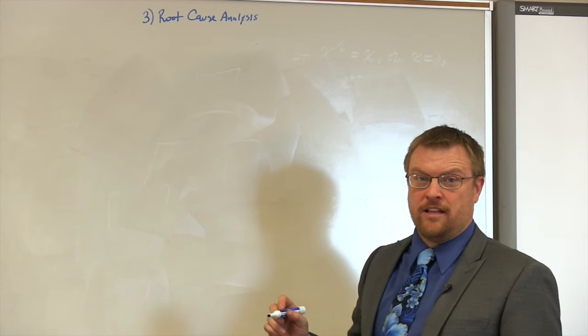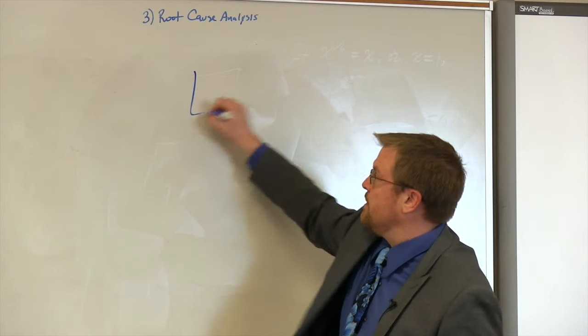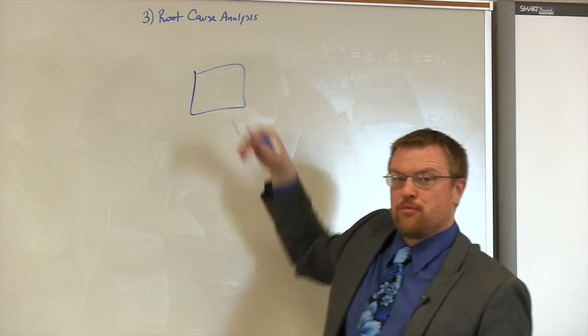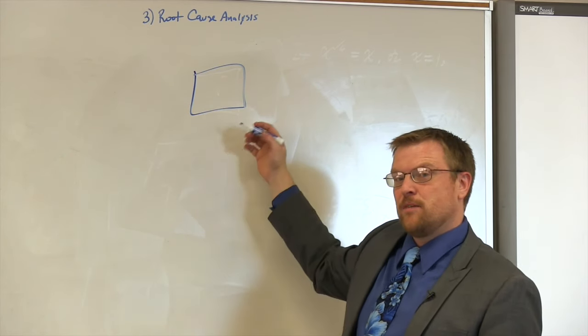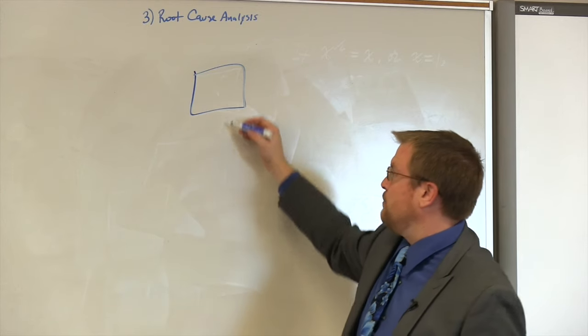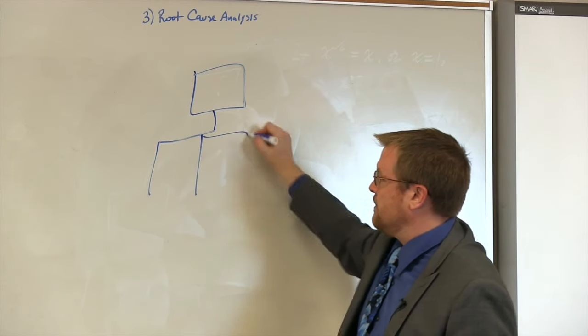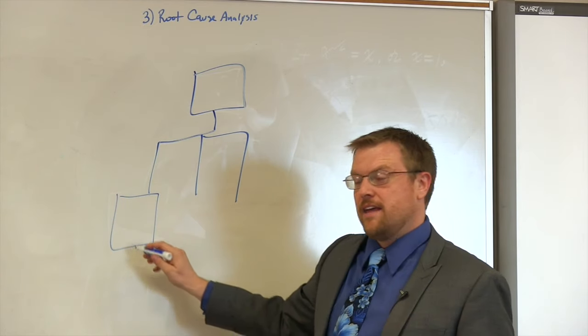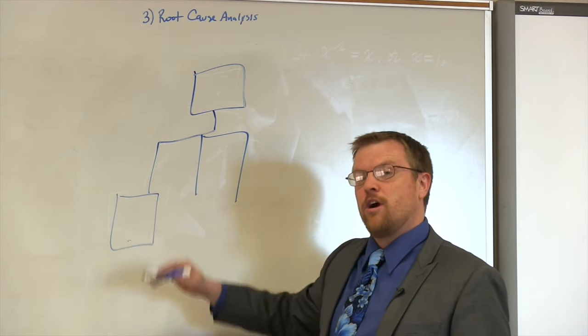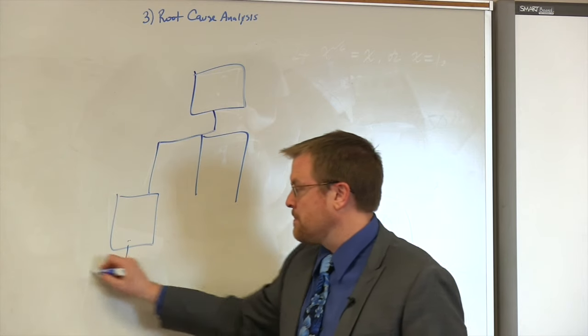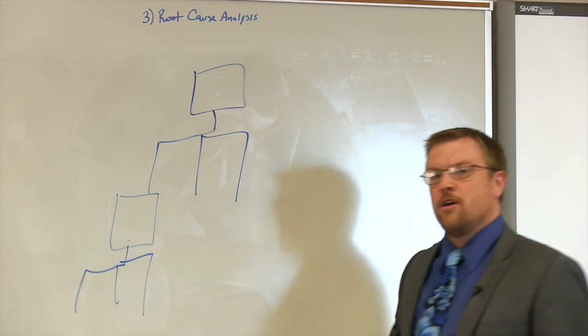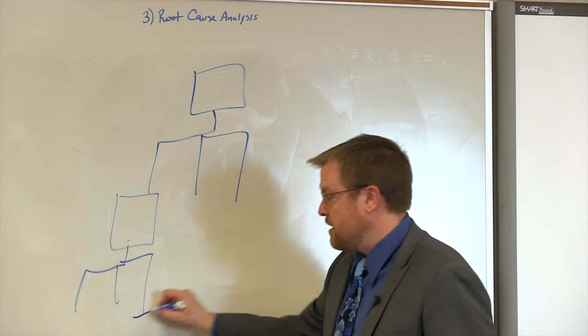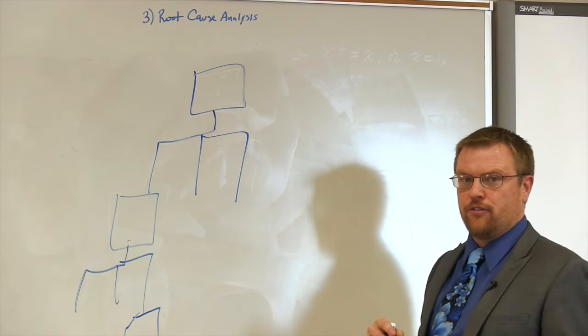The third step is a root cause analysis. In this process, you take the problem that you initially identified, and you form a branching tree identifying the sub-problems that lead to that initial problem. And for each of these sub-problems, you again branch down and figure out what caused that problem. Why did that problem occur? And you do that over and over again until you've got five levels.